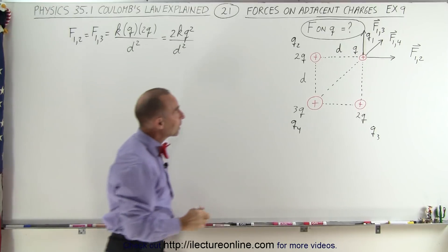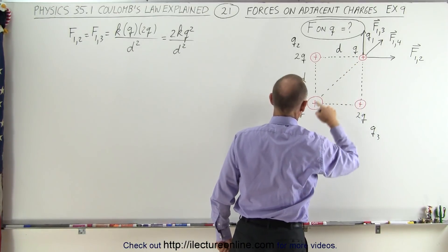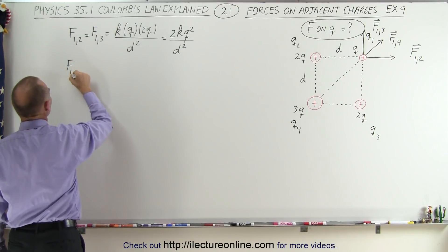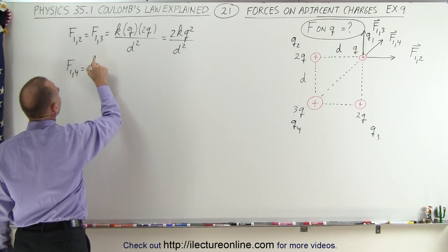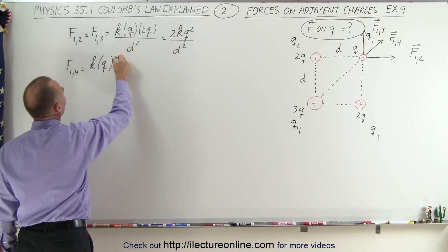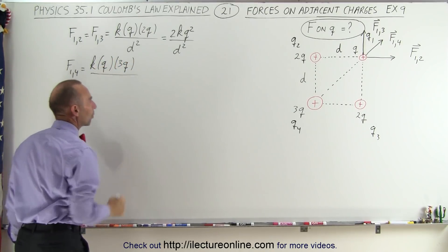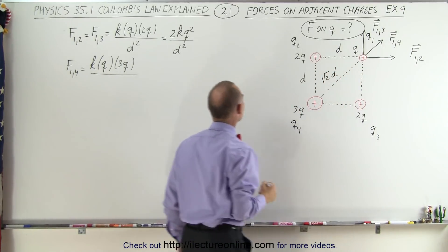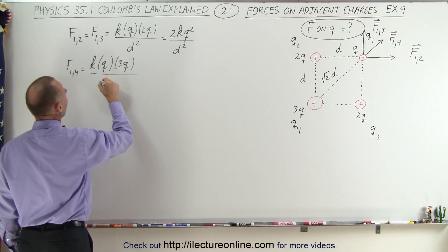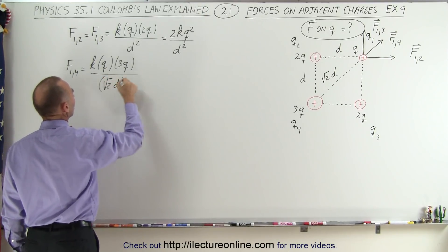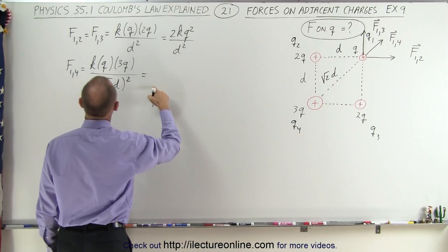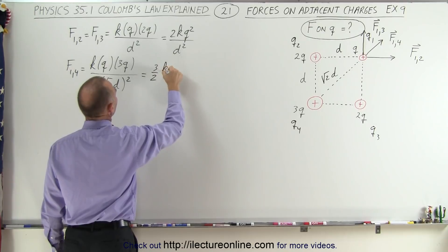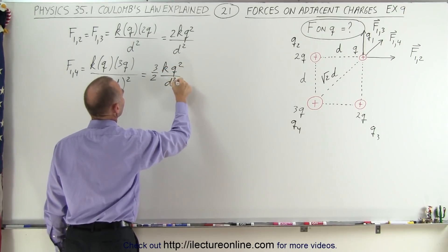Now for the force between Q1 and Q4, F1,4 is a little different. F1,4 equals k times q times 3q divided by the distance squared. The distance along the diagonal is √2 times d, so the denominator is (√2 · d) squared. This gives us (3/2)kq² divided by d².